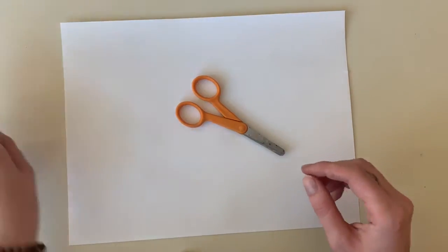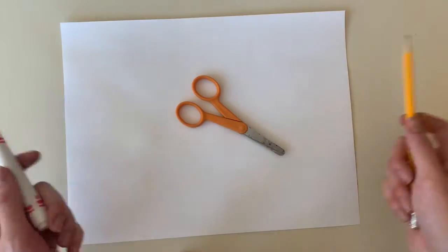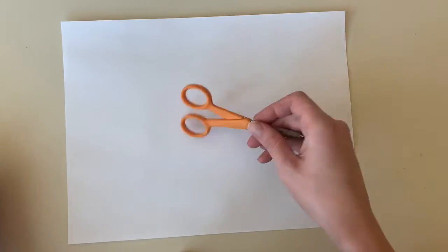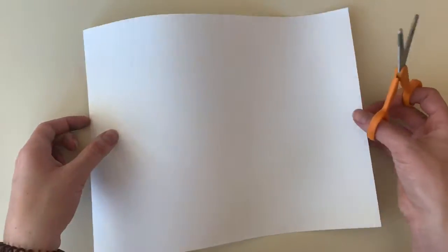So once we finish our warm and cool color schemes, we're going to flip our paper over so we don't see our colors. We're going to need a scissor and a pencil.